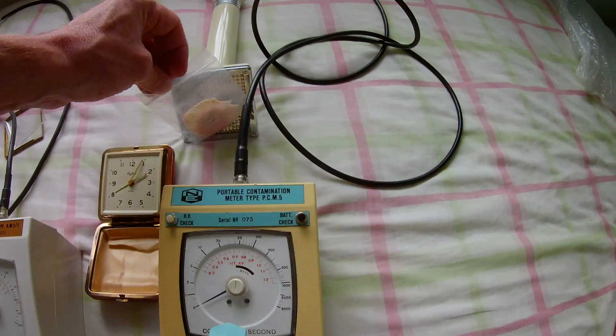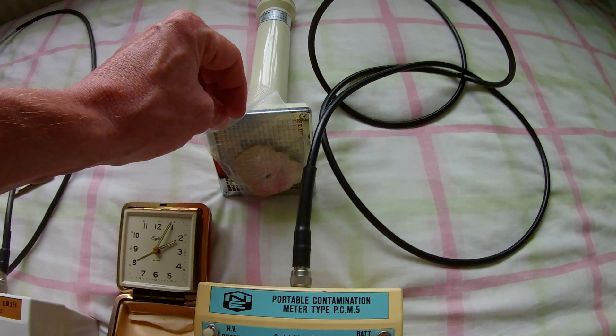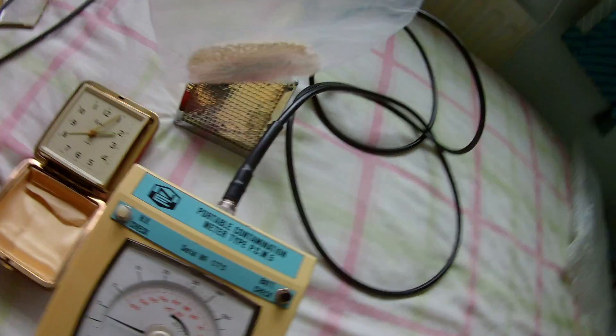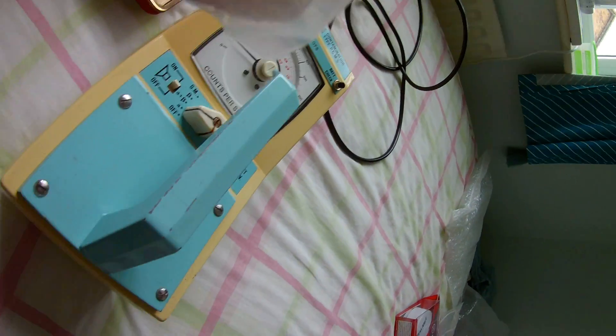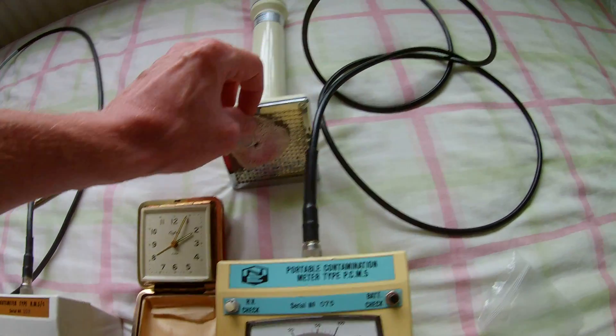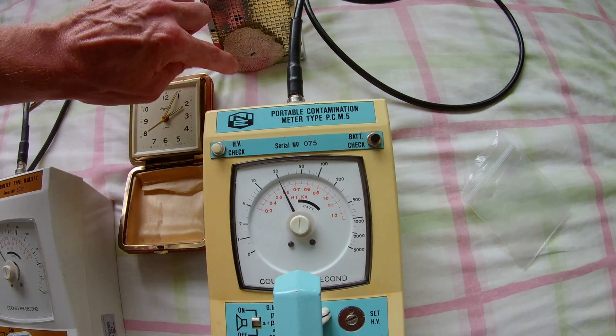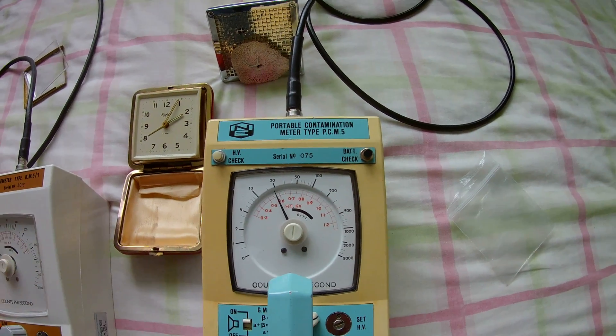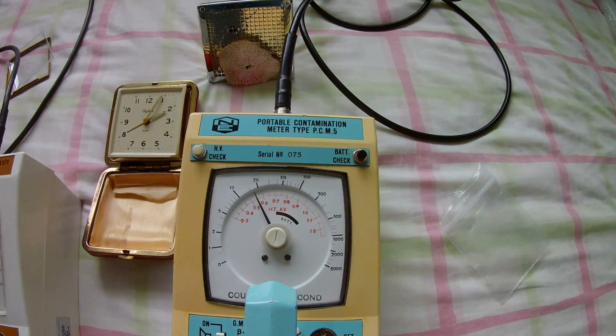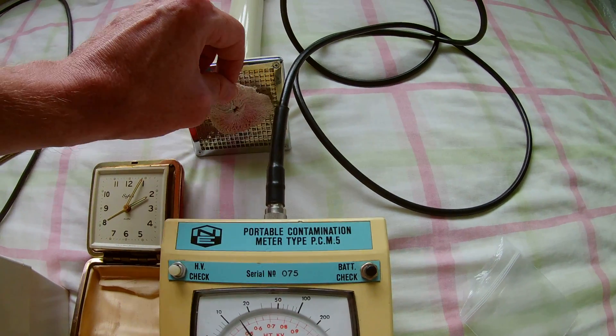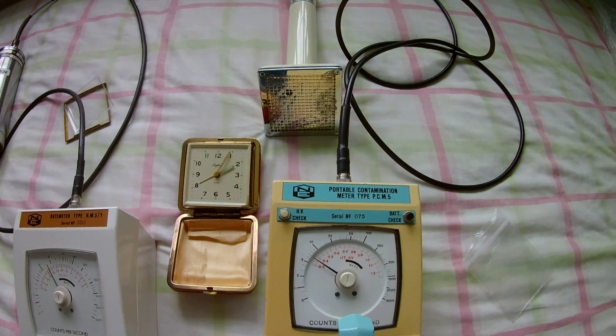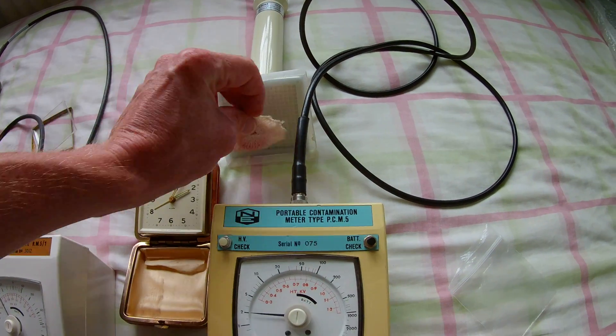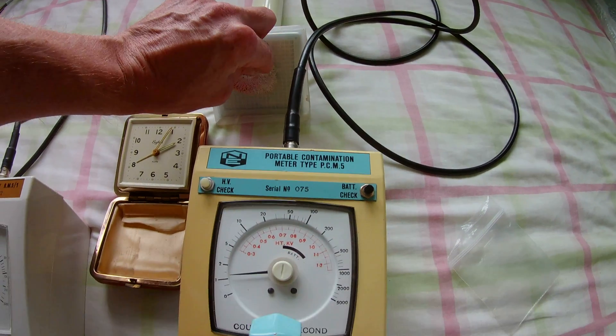I'm going to show the alpha contamination from this gas mantle. If we use the plastic cover that the probe comes with, it does stop the alpha particles.